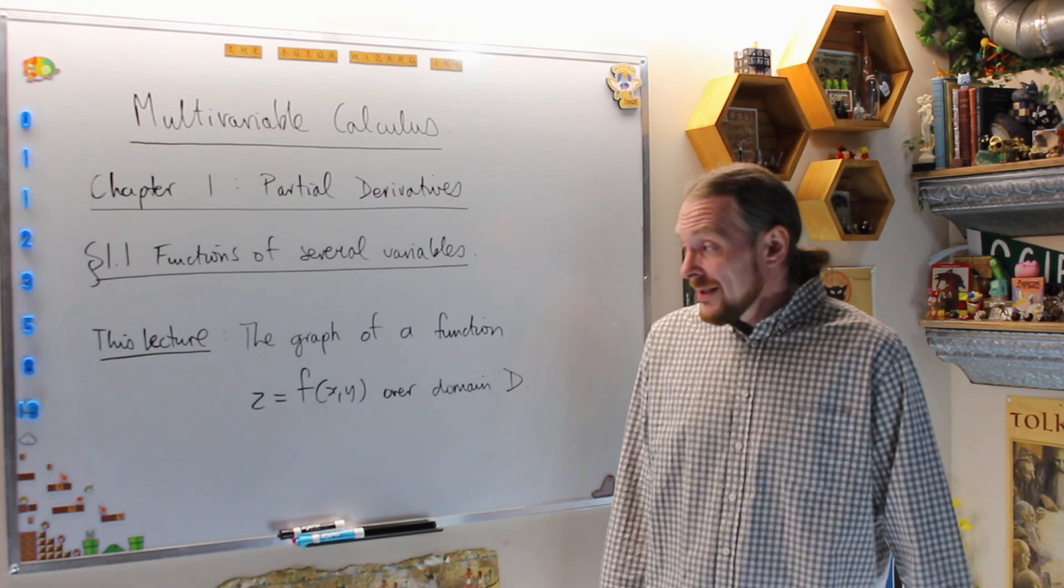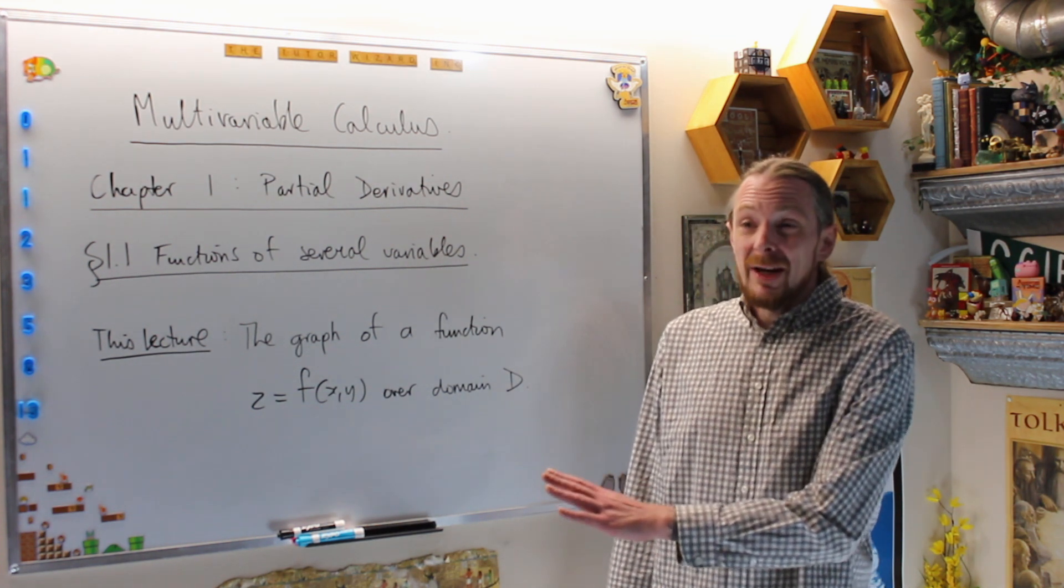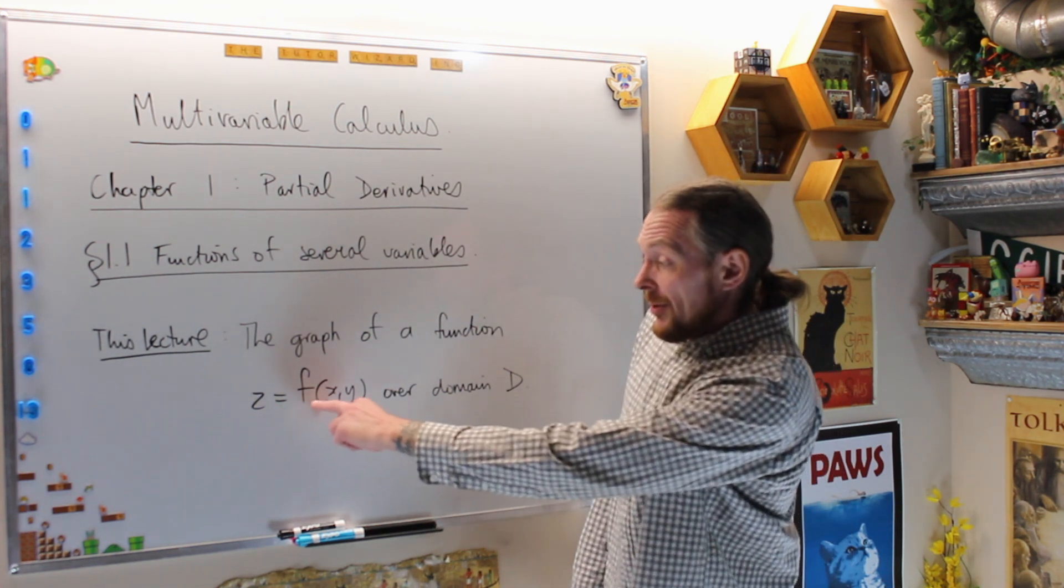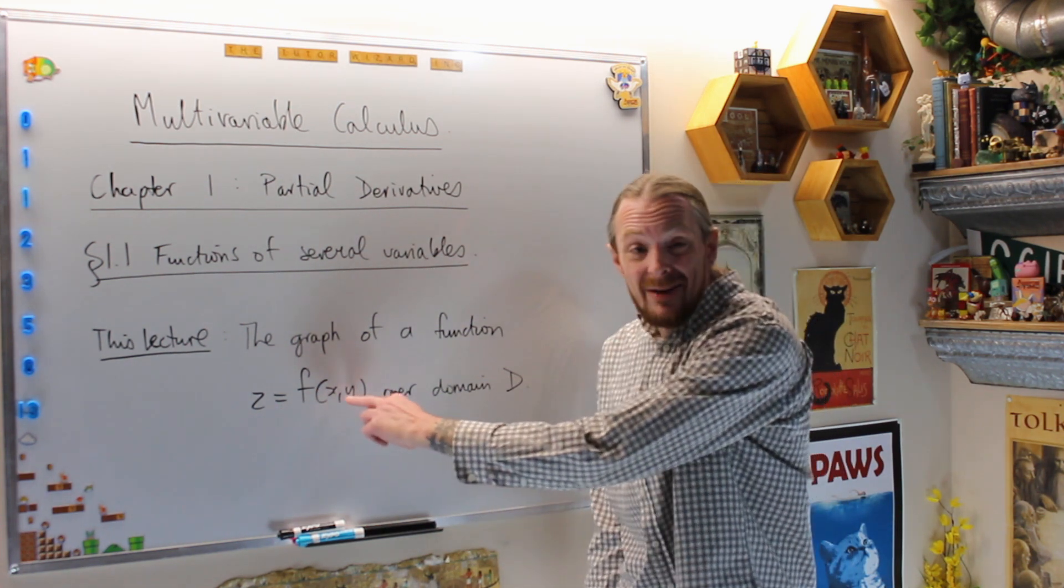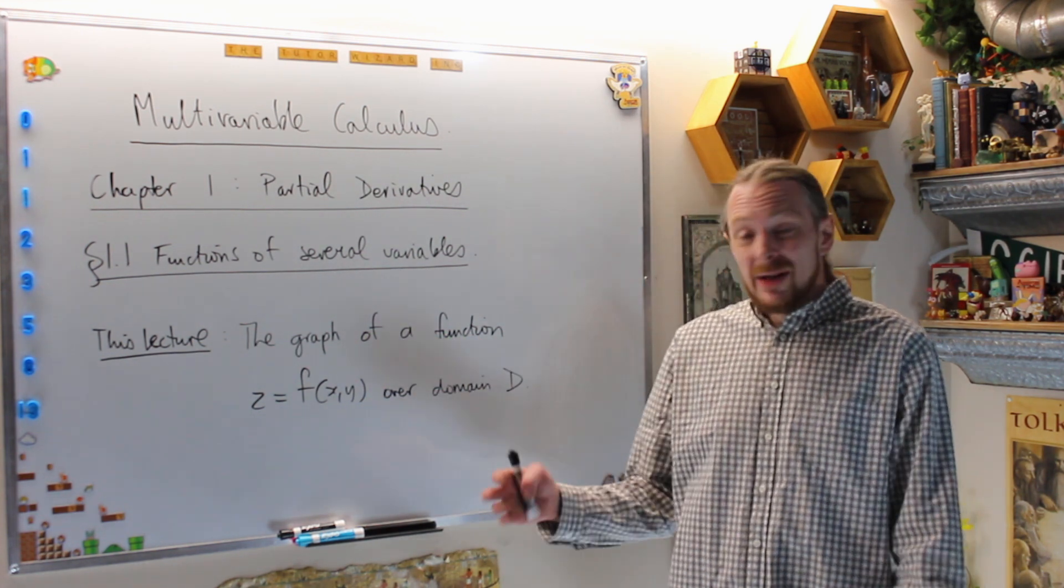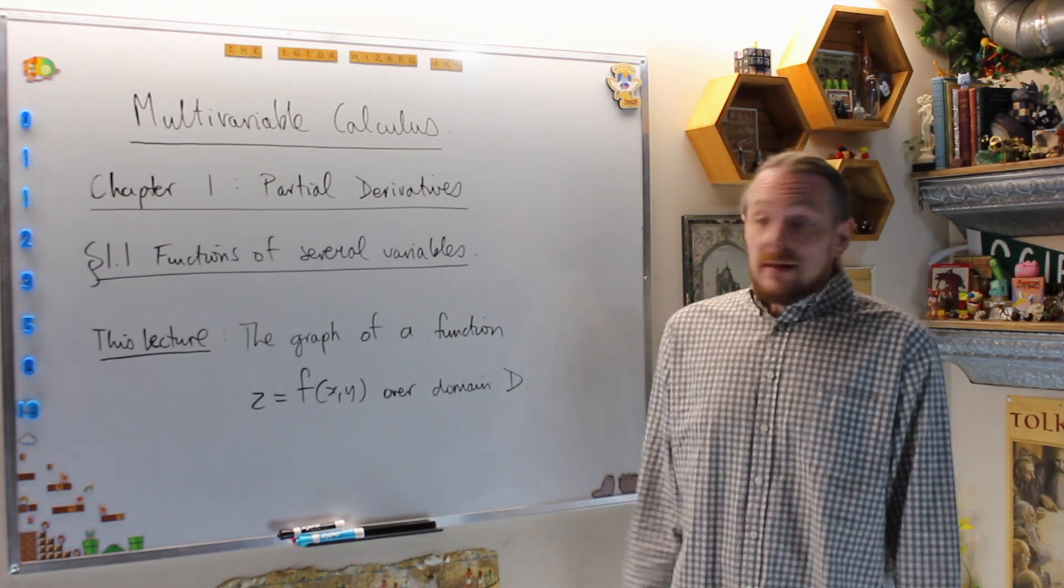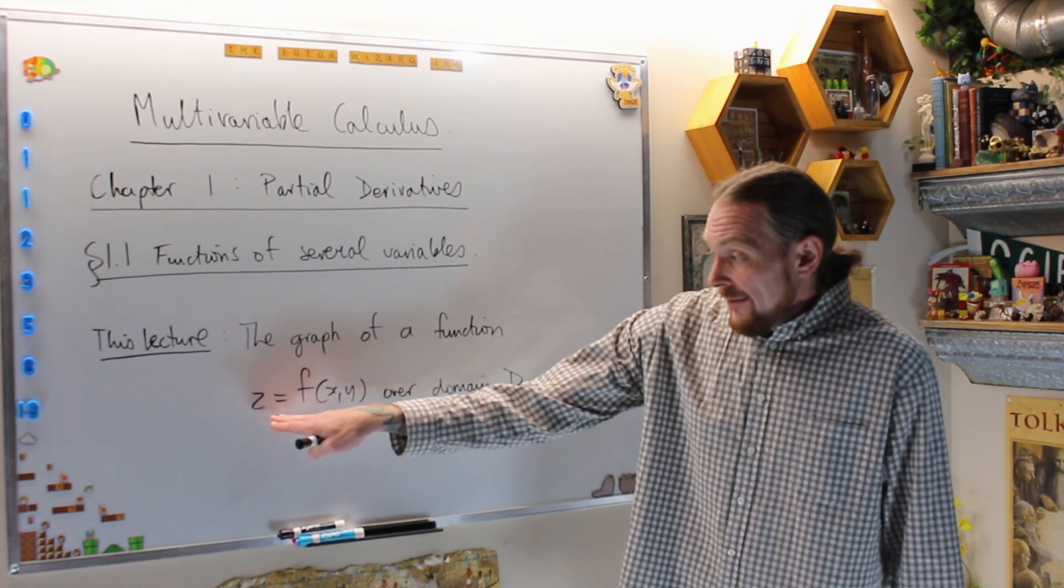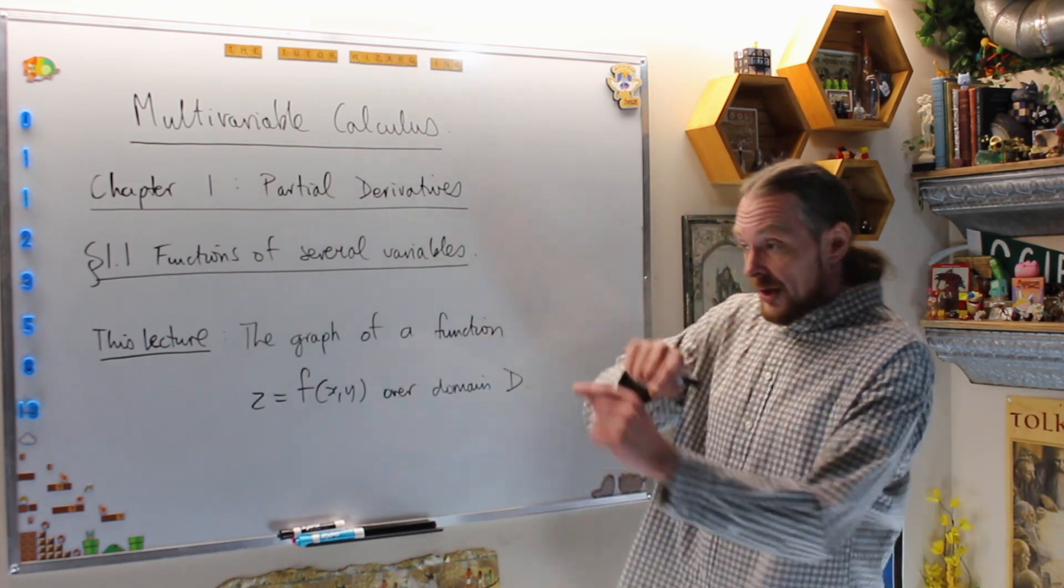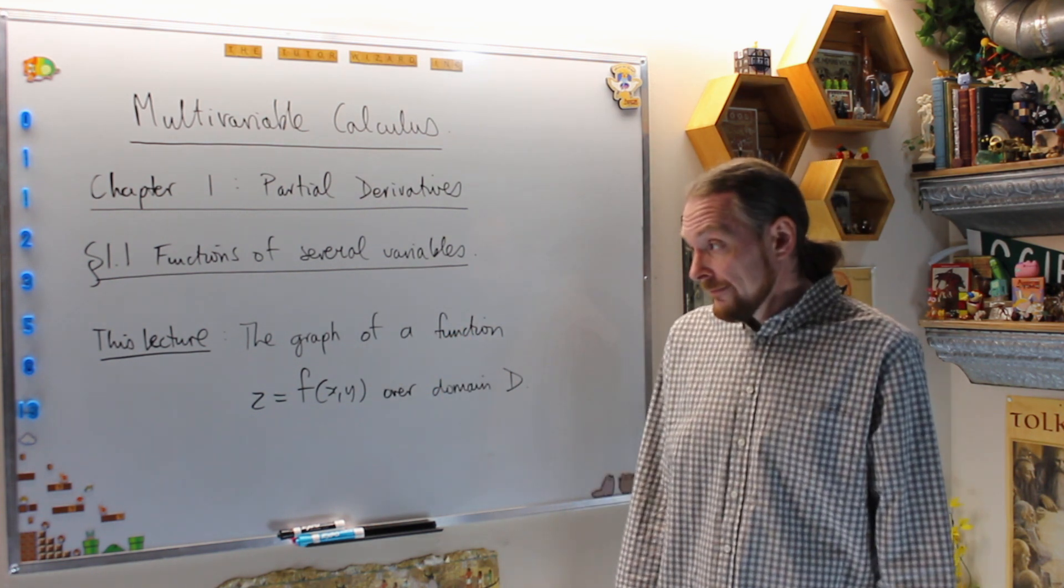Section 1.1 is functions of several variables. Last time we looked at functions of several variables, in particular functions of two variables. Now we're considering z equals f of xy, where x and y are the independent variables. What we can now do is graph or sketch the graph of z, and it's going to be a surface in three space instead of a curve in the plane like we did for functions of one variable.